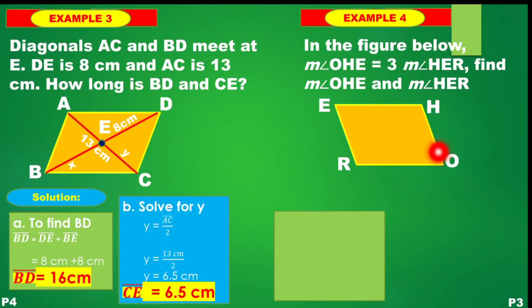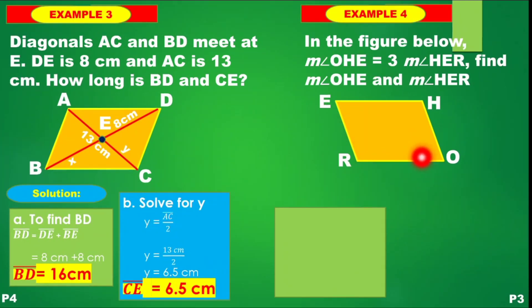Going back to angle OHE: this angle is 3 times the measure of angle HER. You would have the measure of angle E plus the measure of angle H is equal to 180 degrees.